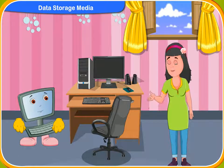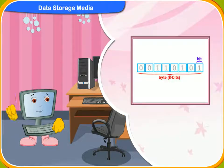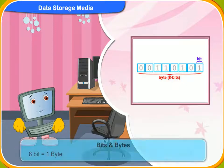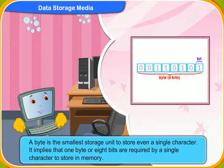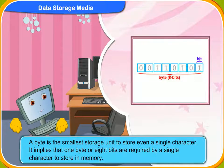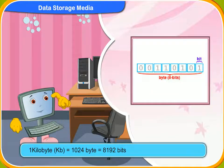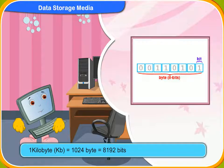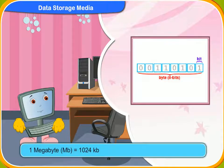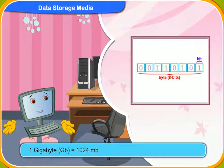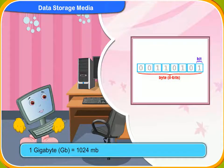What is the difference between bits and bytes? Bytes are bigger than bits. 8 bits make 1 byte. A byte is the smallest storage unit to store even a single character. It implies that 1 byte or 8 bits are required by a single character to store in memory. 1 kilobyte consists of 1024 bytes, so 1 kilobyte contains 8192 bits. 1 megabyte is made up of 1024 kilobytes. 1 gigabyte is equal to 1024 megabytes.